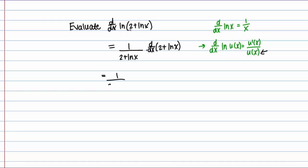So that derivative: the derivative of 2 is just 0, and the derivative of natural log of X is 1 over X. So in the end I have 1 over X times 1 over (2 plus natural log of X) as my derivative.